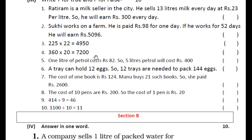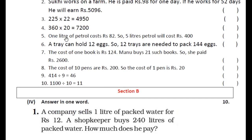इसको भी check करिएगा. Q4: One liter of petrol costs rupees 82, so 5 liters of petrol will cost rupees 400. इसके लिए 82 में 5 का multiply करके answer check करना है. Q5: A tray can hold 12 eggs. So 12 trays are needed to pack 144 eggs. 1 tray में 12 eggs आते हैं, तो 12 trays में कितने eggs आएंगे? दोनों का multiply करके check करिए.